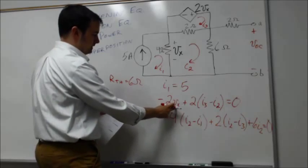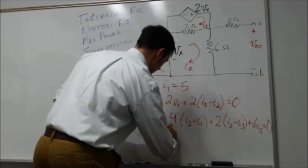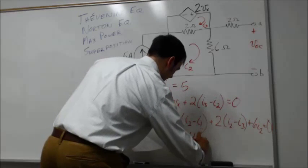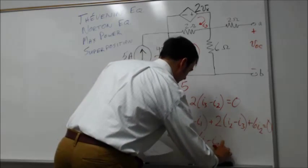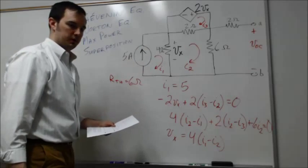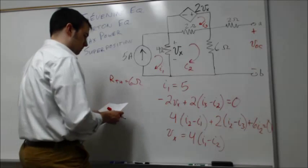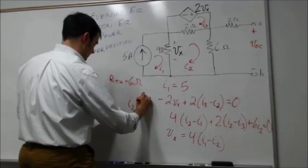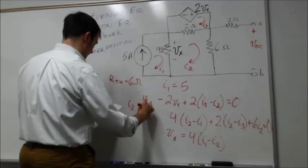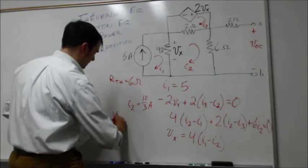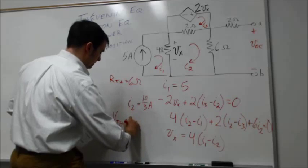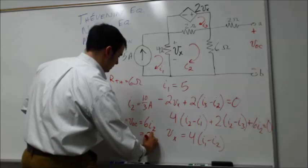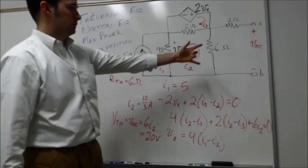We still need to express V_x in terms of mesh currents. In this case, V_x = 4(I₁ − I₂). With all equations in place, solving gives I₂ = 10/3 amps. The Thevenin equivalent voltage equals the open-circuit voltage V_oc = 6 × I₂.